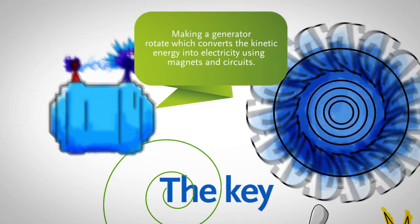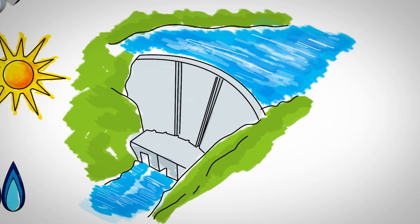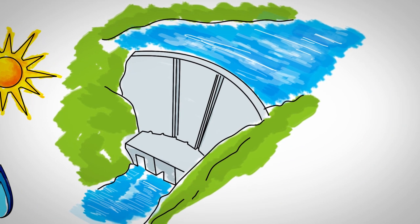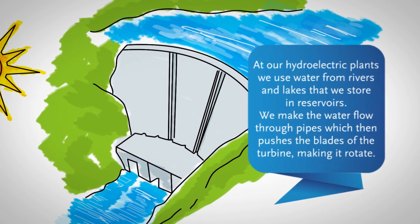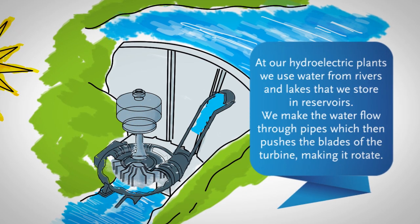At our hydroelectric plants, we use water from rivers and lakes that we store in reservoirs. We make the water flow through pipes, which then pushes the blades of the turbine, making it rotate.